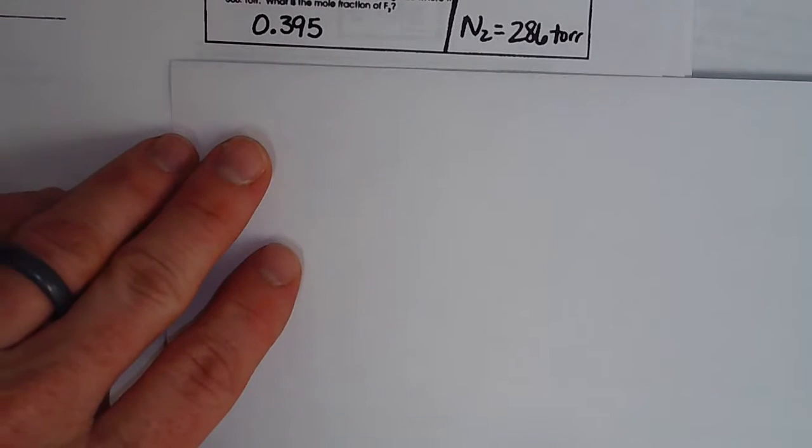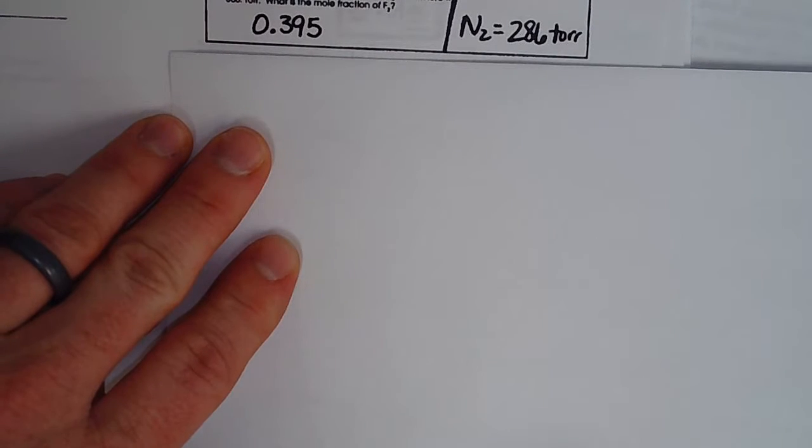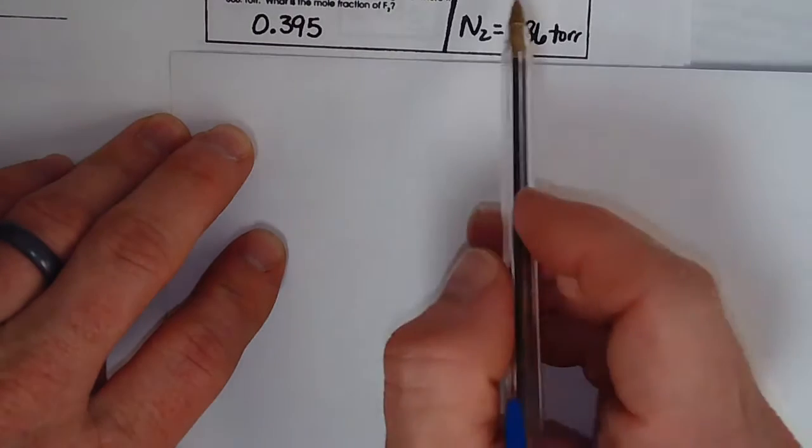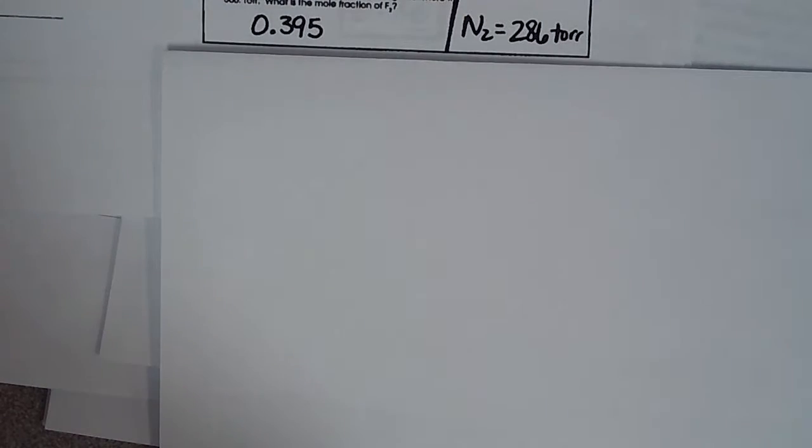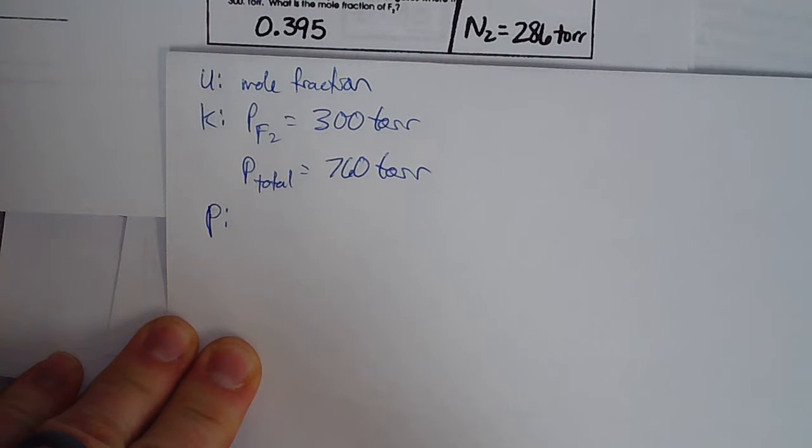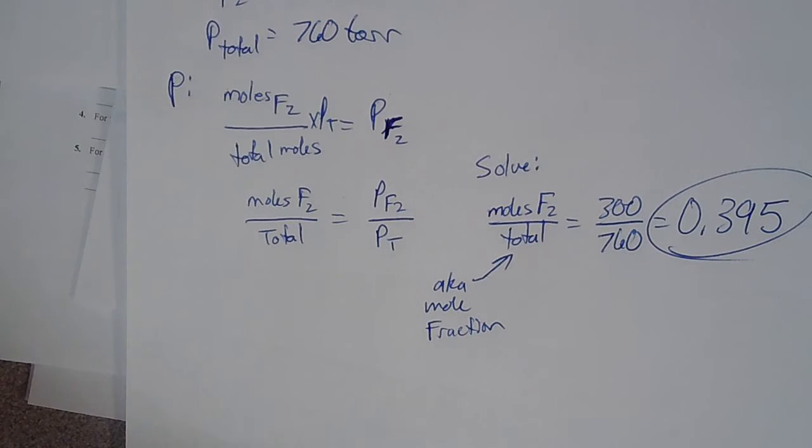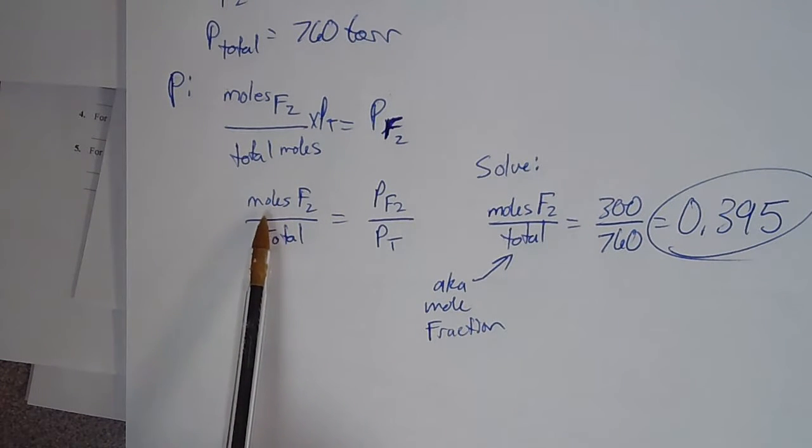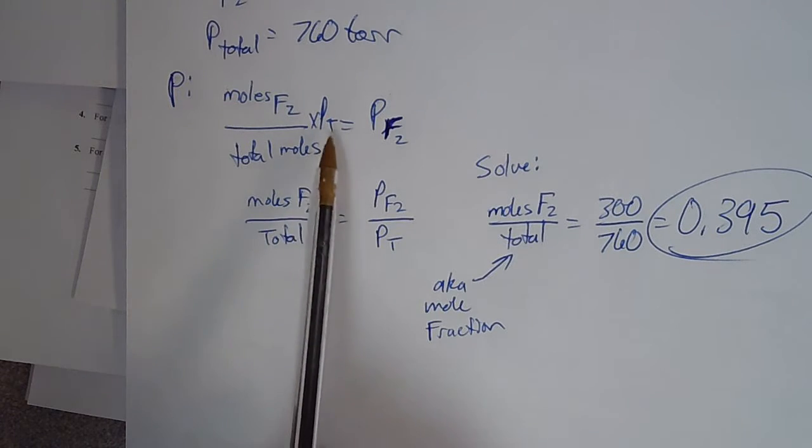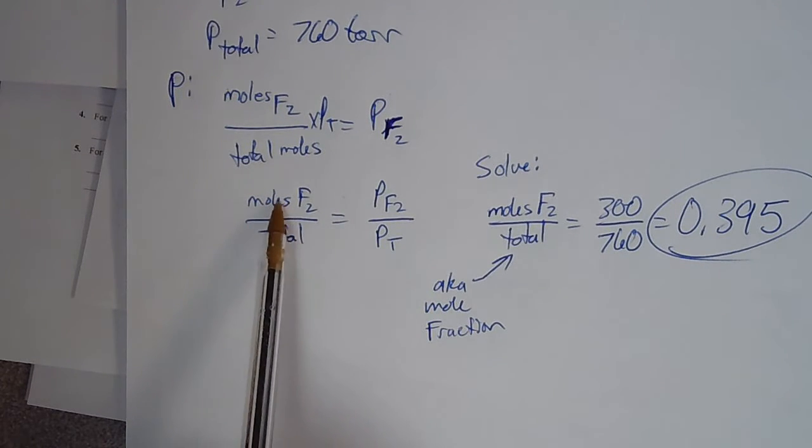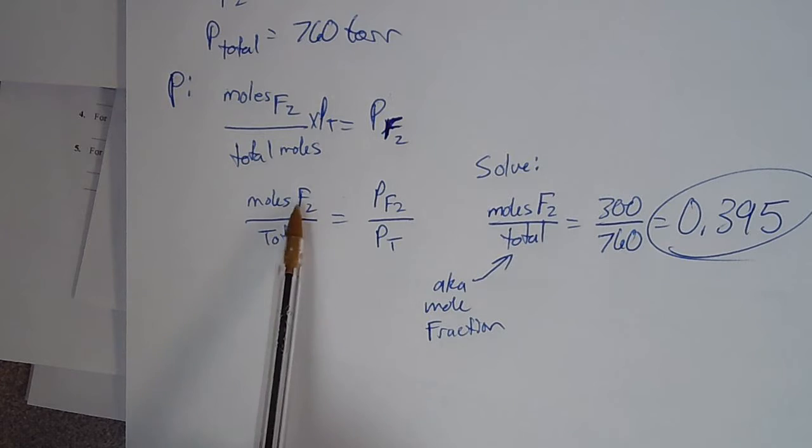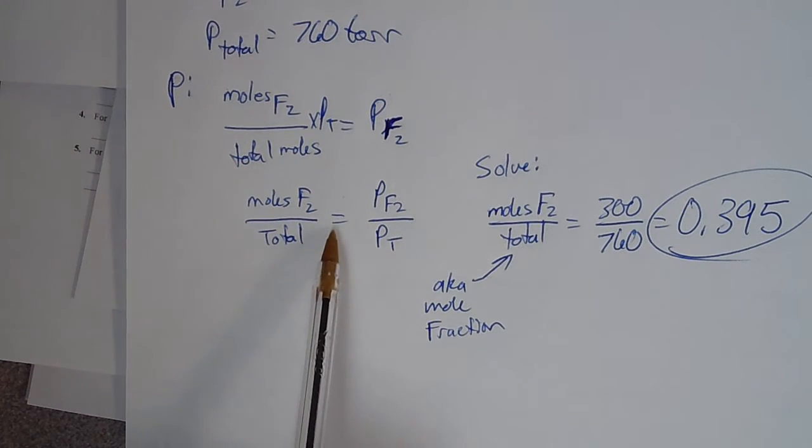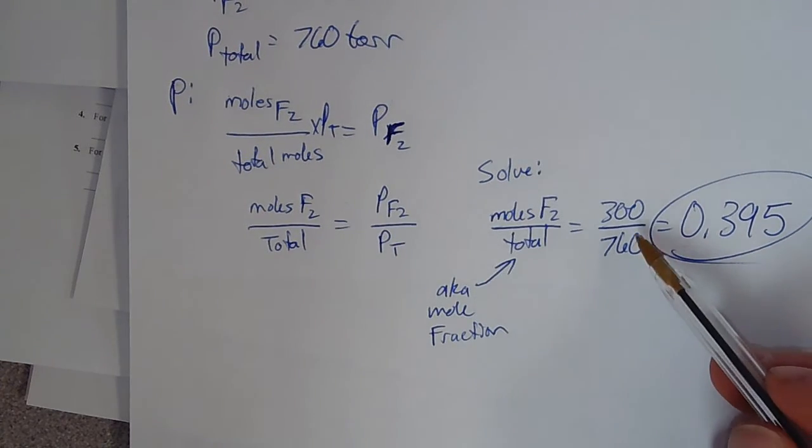All right. Number 5 is supposed to tell you that the total pressure is 760, but it's cut out over here. So again, we're going to use the mole fraction equation to solve for this. All right, so we set up this equation. And then what you have to realize is that the mole fraction is this quantity—it's the fraction of the moles of F2 out of the total.